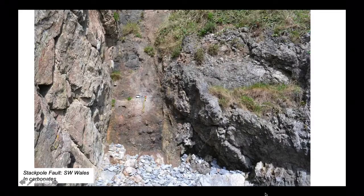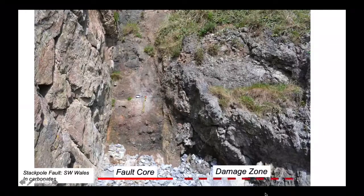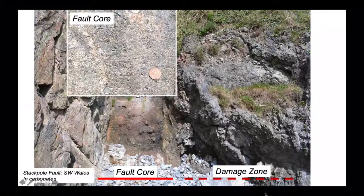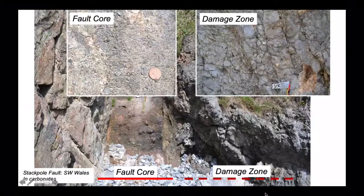Here's another example of fully lithified material — limestones from southwest Wales — with the fault core in the middle of the photograph, compass sat on it, and shattered limestones on both sides. It's a strike-slip fault zone, a very steep structure. We have the fault core and the damage zone. Close up, the fault core shows lots of angular fragments and fine-grained material. The damage zone is rather different — you can still see the fracture damage, but you can almost jigsaw the pieces together again and still see the layering in the limestones. So we have a halo of damage with lots of fracturing but not much offset.